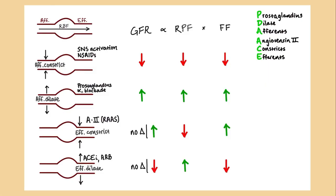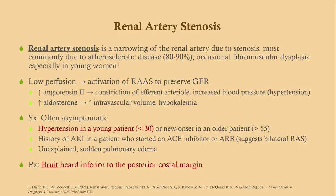Renal artery stenosis is a narrowing of the renal artery. Most commonly it's due to atherosclerotic disease, which tends to be unilateral. Occasionally it can be due to fibromuscular dysplasia, especially in young women. So if you're dealing with sudden onset hypertension in an older man, think possibly unilateral renal artery stenosis; whereas a young woman who suddenly develops high blood pressure may suggest bilateral renal artery stenosis.